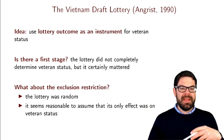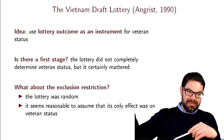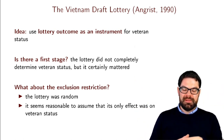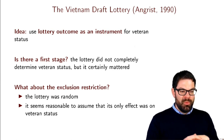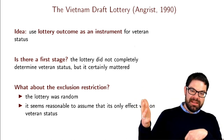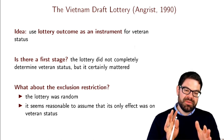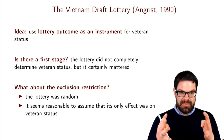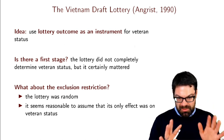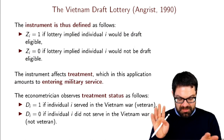One could think about other mechanisms. For example, if you have a very low lottery number and know you'll likely get drafted, you might engage in riskier health behaviors that affect earnings through a channel unrelated to actually serving — perhaps developing addictions. That would be a violation of the exclusion restriction. Formally, the exclusion restriction requires that the potential outcomes of a person should not depend on the status of the instrument.